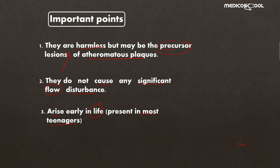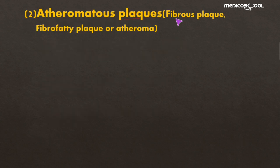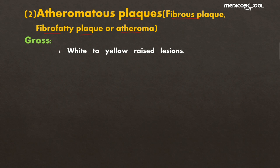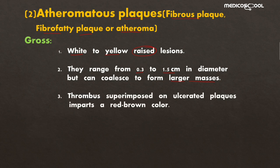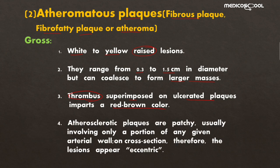When fatty streaks are converted into atherosclerotic plaque, what are the gross and microscopic features? Atherosclerotic plaques are also known as fibrous plaques, fibrofatty plaques, or atheromas. Grossly, they are white to yellow raised lesions. Their size ranges from about 0.3 to 1.5 centimeters in diameter but may coalesce to form larger lesions up to 10 to 15 centimeters. Thrombus may be superimposed on ulcerated plaques, imparting a red-brown color.